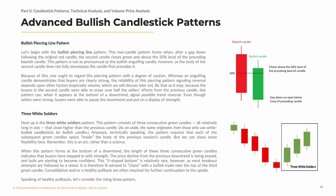Let's begin with the bullish piercing line pattern. This two-candle pattern forms when, after a gap down following the close of the original red candle, the second candle closes green and above the 50% level of the preceding bearish candle. This pattern is not as pronounced as the bullish engulfing candle, however, as the body of the second candle does not fully encompass the candle that precedes it. Because of this, one ought to regard this piercing pattern with a degree of caution. Whereas an engulfing candle demonstrates that buyers are clearly strong, the reliability of this piercing pattern signaling reversal depends upon other factors, especially volume. Be that as it may, because the buyers in the second candle were able to erase over half the sellers' efforts from the previous candle, this pattern can, when it appears at the bottom of a downtrend, signal possible trend reversal. Even though sellers were strong, buyers were able to pause the downtrend and put on a display of strength.